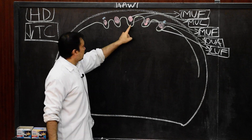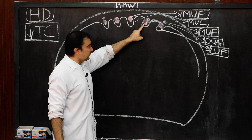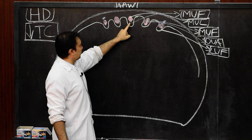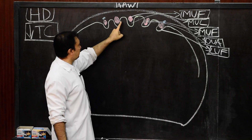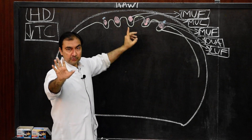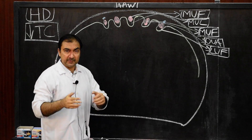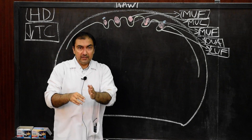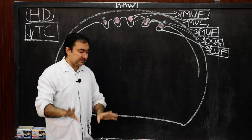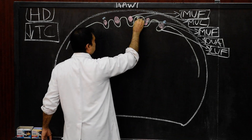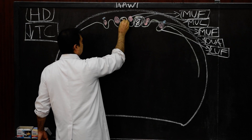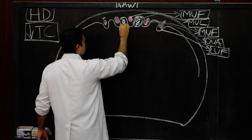The fossa present between the median umbilical fold and medial umbilical fold is called the supravesical fossa. Similarly, the fossa between the median umbilical fold and medial umbilical fold on the other side is also called the supravesical fossa. So there are two supravesical fossae — peritoneal depressions present between the median umbilical fold and on either side the medial umbilical folds.